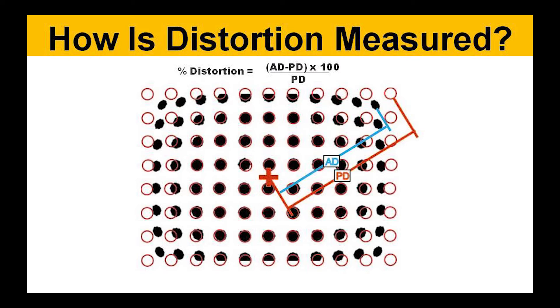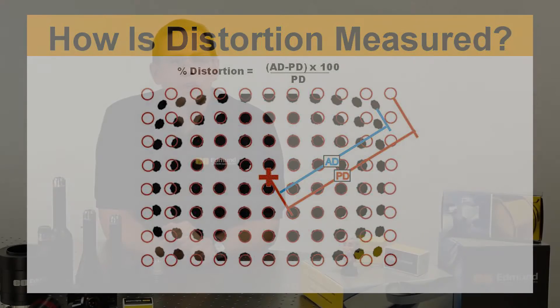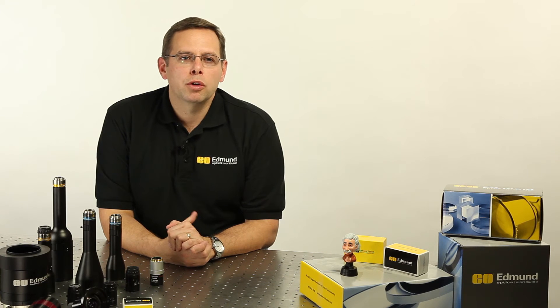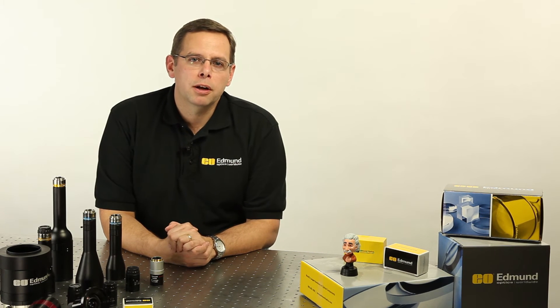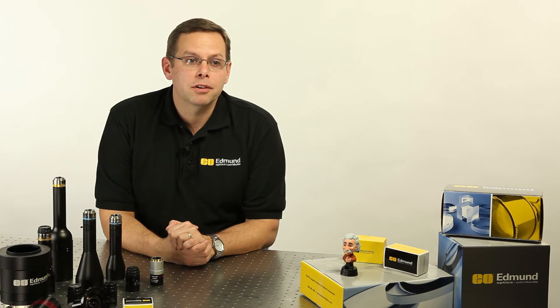This applies to barrel or pincushion distortion. Generally, as a rule of thumb, you want to use a calculation method as opposed to remapping the image, because remapping does take up an awful lot of processor intensity.